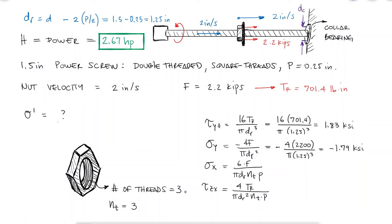Even under this assumption, we know that the first thread will carry more of the load than the remaining threads, so a reasonable assumption could be to divide those loads by two threads instead of three, accounting for a higher percentage for the first engaged thread.